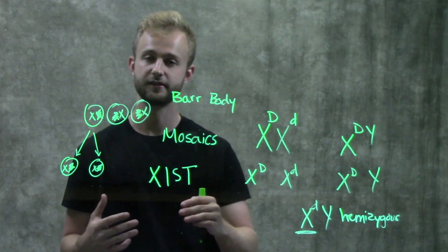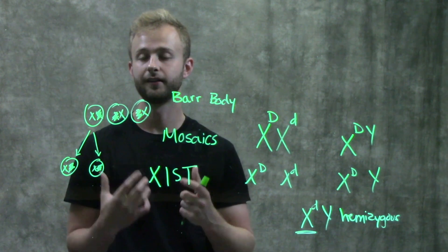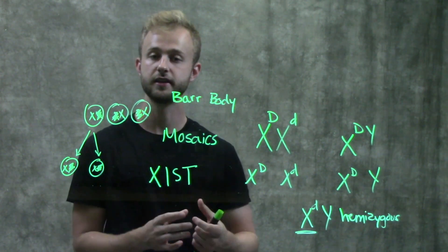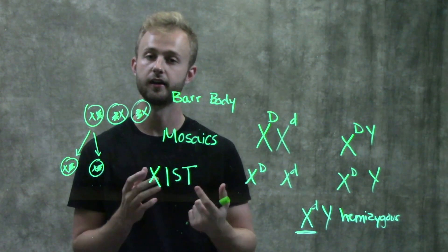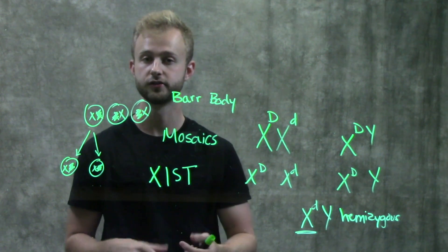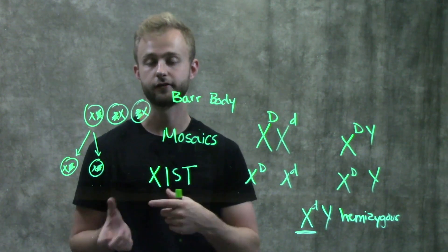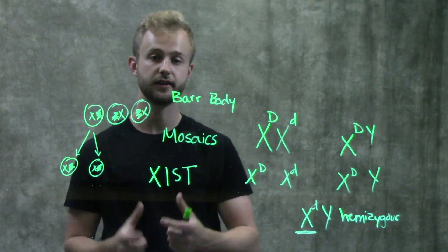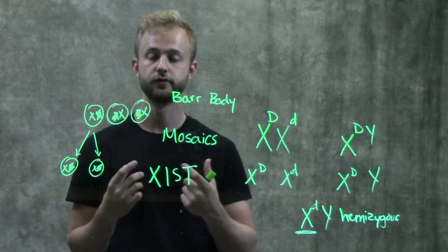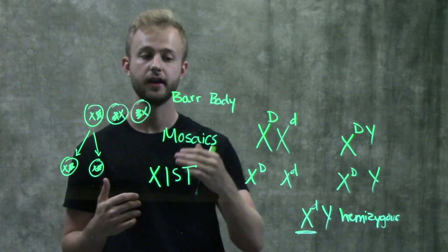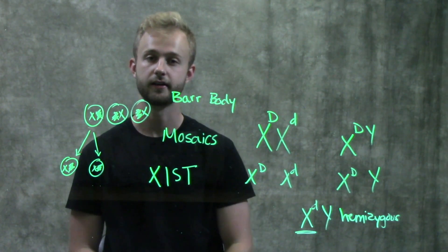And so once this is activated, it's going to allow for the modification of the DNA and the proteins that DNA is associated with, which are called histones. And so it's going to allow modifications in those such as DNA methylation, which is going to eventually result in that X chromosome being inactivated and transformed into a bar body.